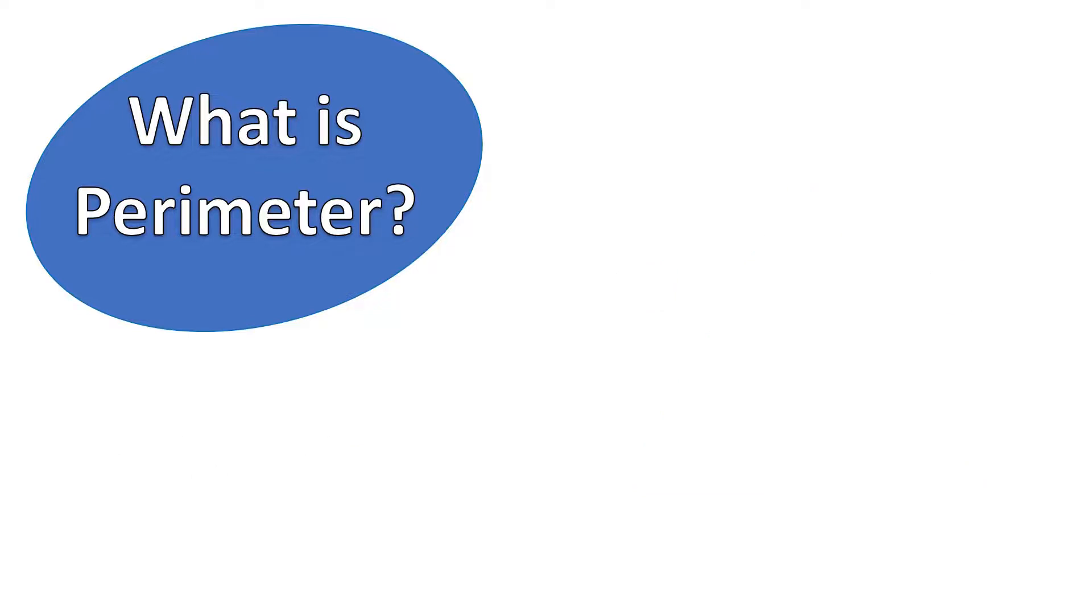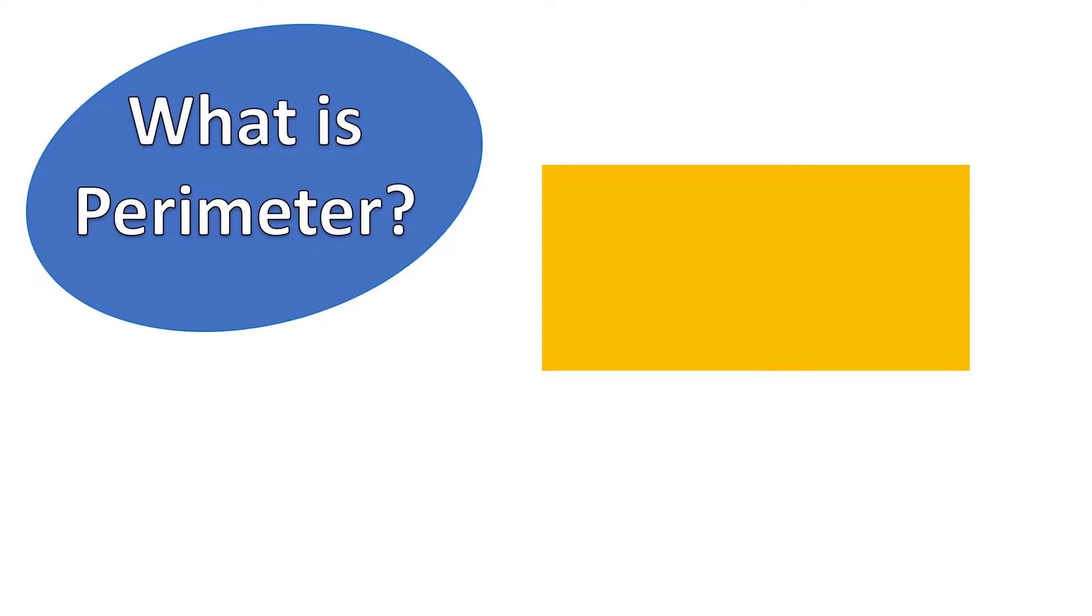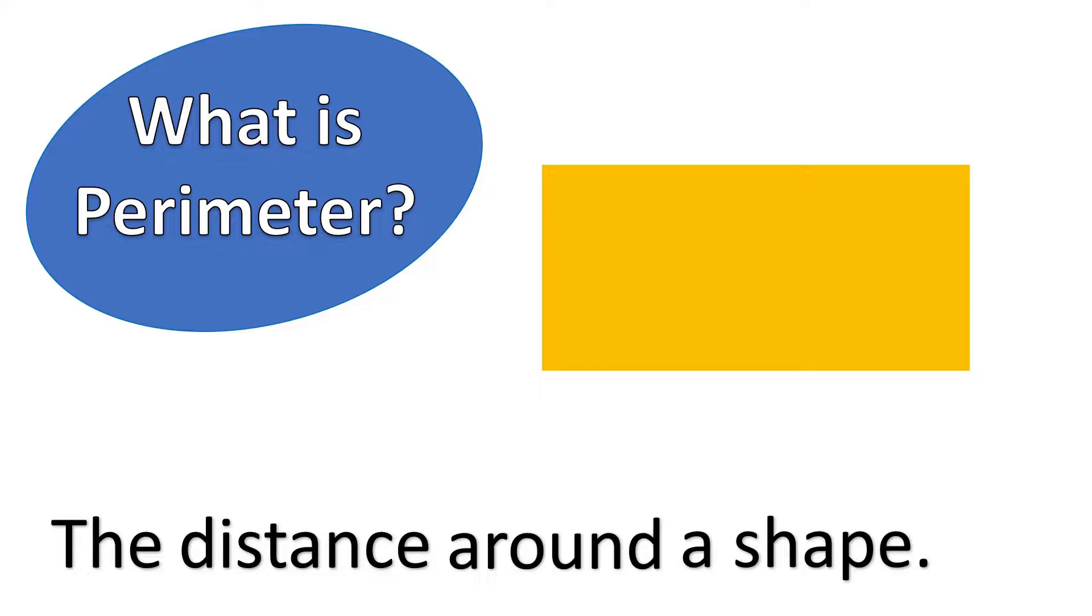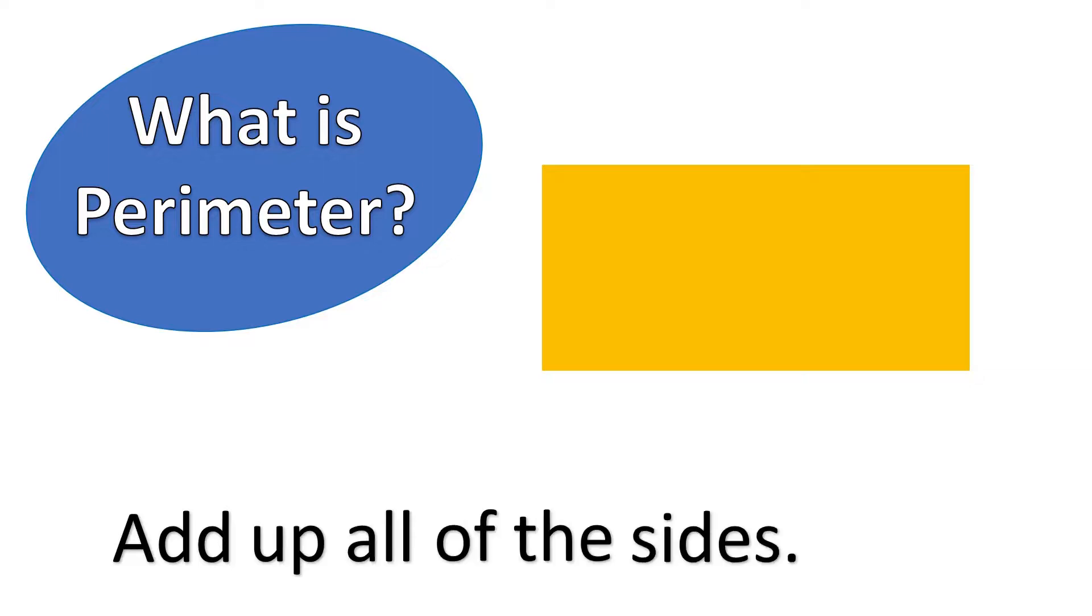Okay, so you guys are getting pretty good at this perimeter stuff. So I'm going to use a slightly trickier shape. Here we have a rectangle. Guys, can you refresh my memory? What is perimeter? Yes, it is the distance around a shape. So how do we find out the perimeter of a shape? By adding up all the sides of the shape.